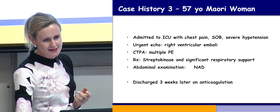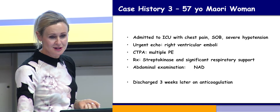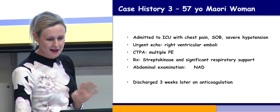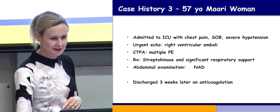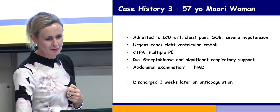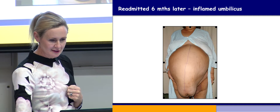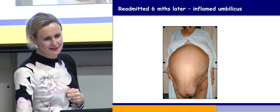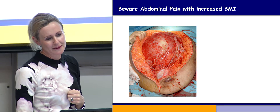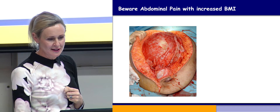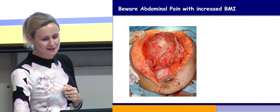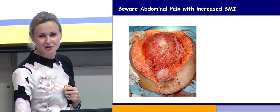The third case is a 57-year-old Māori woman who presented to ICU with chest pain, shortness of breath, and hypertension. CTPA showed multiple PEs; she was managed and discharged three weeks later on anticoagulation. Her abdominal examination was apparently normal. She came back three weeks later with an infected umbilicus, and on surgery a large cyst was noted. The moral of the story is always beware of increased BMI and abdominal pain — these things are difficult to diagnose and if in doubt, get imaging.